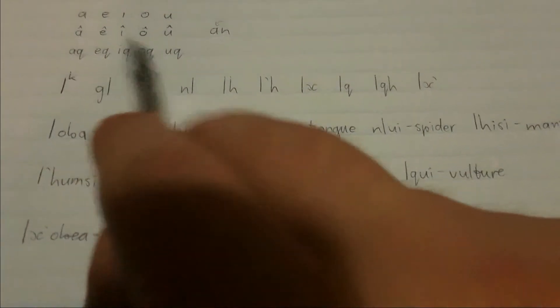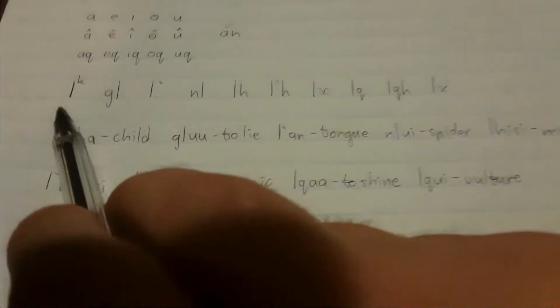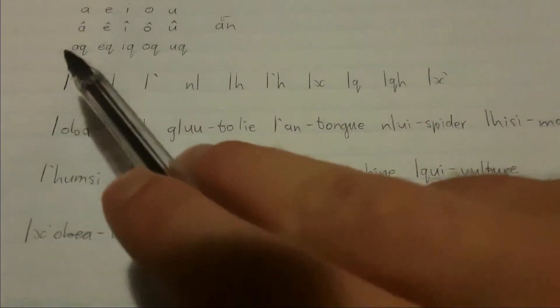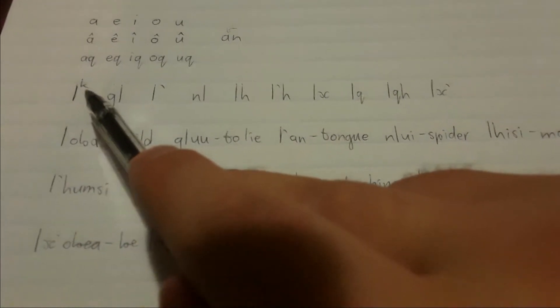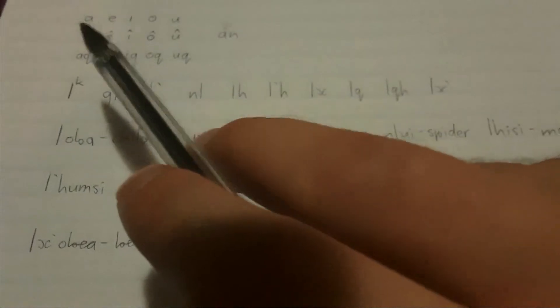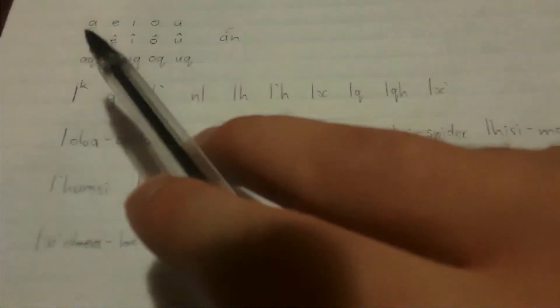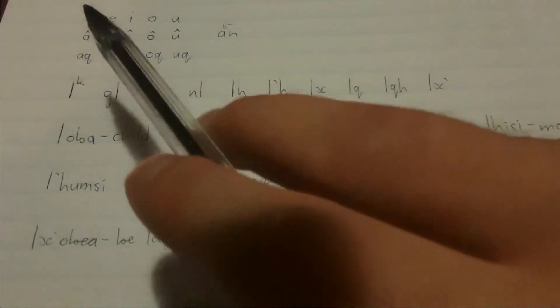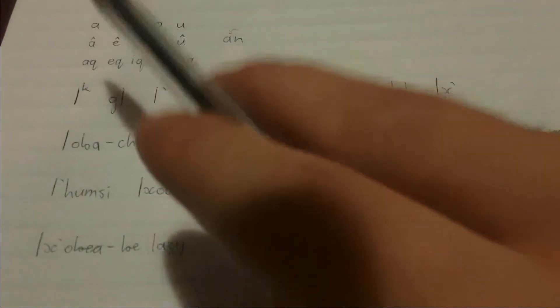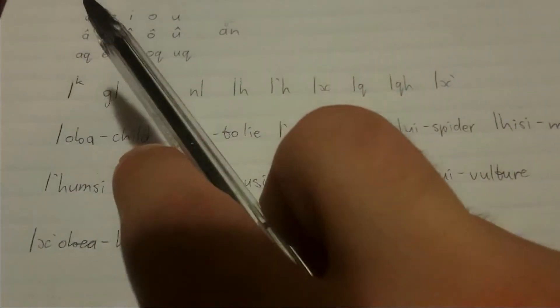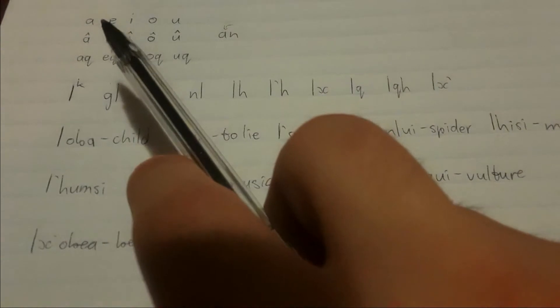The next one requires some explanation: 'du,' which means to lie. At the back of the mouth when you're pronouncing a click, the tongue raises up towards the velum. For the tenuous click, this velar closure is voiceless. But for the voiced click, it's basically the same as a G. When you pronounce the tenuous click it's like a K, but for the voiced click it's like a G.